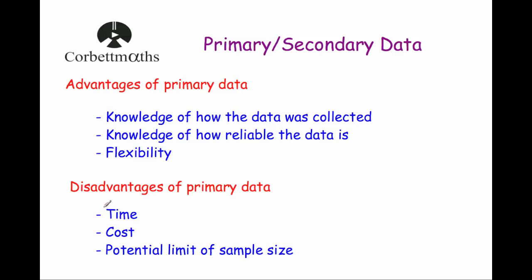The disadvantages of using primary data: first, there is the time aspect — carrying out investigations, surveys, or telephone interviews takes a lot of time, and that also means it can be quite expensive. Another disadvantage is the limit to the sample size. If you're doing telephone surveys, you might not be able to interview thousands of people, so there's a limit to how many people are included within the survey or interview.